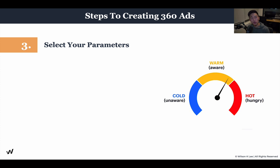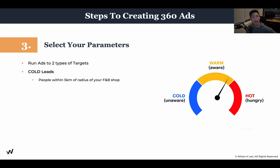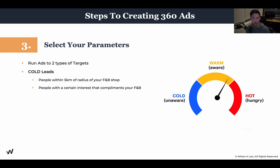Next up, set your parameters — who you're going to run the ads to, when, and all the different targeting details. We're running our ads to two types of demographics. First up is cold leads — people who have never engaged with your restaurant, haven't heard about it, haven't clicked on you yet. We want to show your specific ad to people within a five-kilometer radius who have never engaged, so they become aware of your restaurant. We also need to select people within your radius who have interests that complement your restaurant, such as being foodies or following food content.